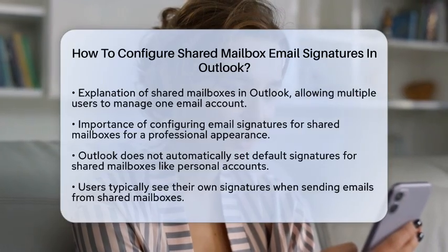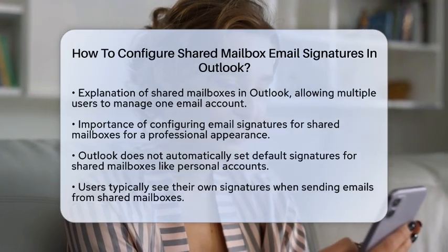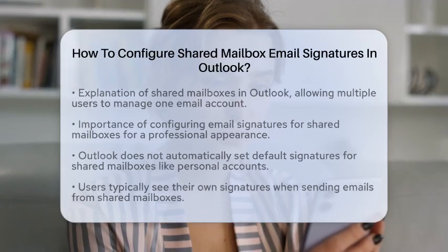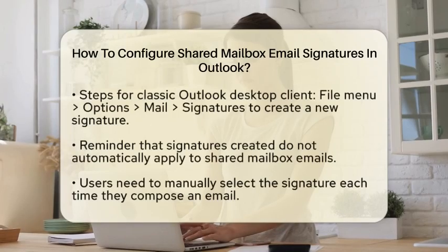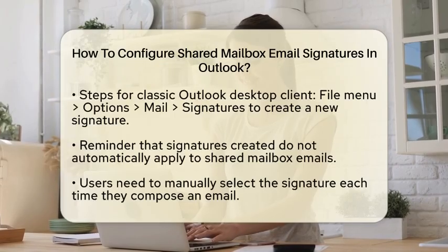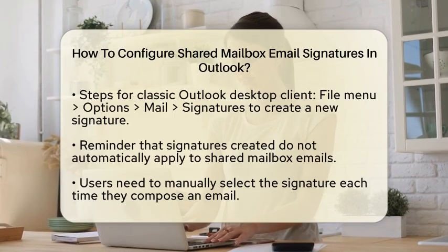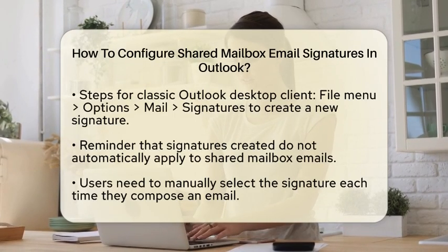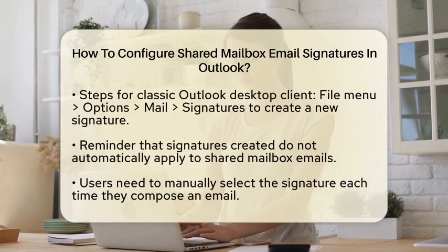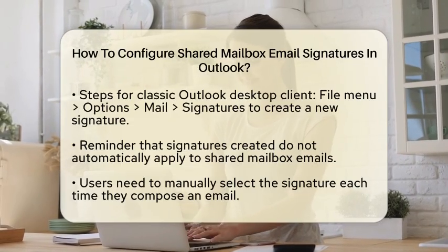Outlook does not automatically allow you to set a default signature for shared mailboxes like it does for personal accounts. Each user typically sees their own signature when sending emails from a shared mailbox. This means that if you want a specific signature for your shared mailbox, you will need to take some extra steps.